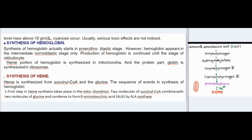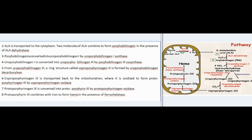Heme is synthesized from succinyl-CoA and glycine. Steps: (1) In the mitochondrion, two molecules of succinyl-CoA combine with two molecules of glycine and condense to form delta-aminolevulinic acid (ALA) by ALA synthase. (2) ALA is transported to the cytoplasm; two molecules of ALA combine to form porphobilinogen in the presence of ALA dehydratase. (3) Porphobilinogen is converted into uroporphobilinogen I by uroporphobilinogen I synthase.